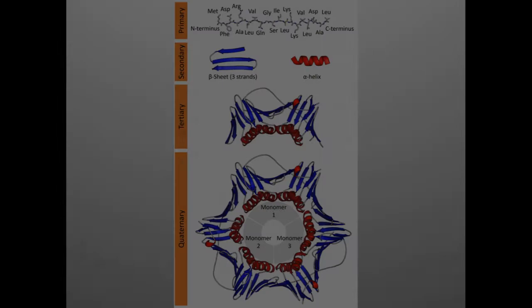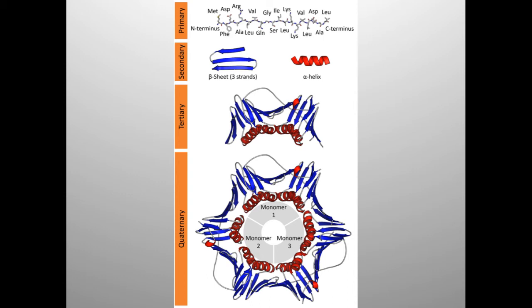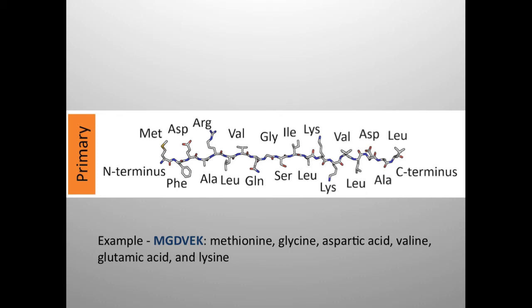Biochemists mark out four orders of biomolecular structure: primary, secondary, tertiary, and quaternary — a perfect illustration of structural embedding. The primary structure of a protein is its amino acid sequence. The primary structure is conceptually linear with no branching, so you can spell it out using an amino acid alphabet — one amino acid after another, like M, G, D, V, E, K: methionine, glycine, aspartic acid, valine, glutamic acid, and lysine. Those are the first six amino acids in the sequence for human cytochrome C.